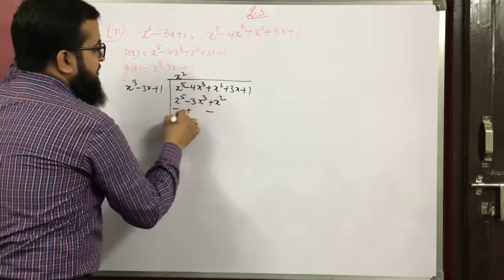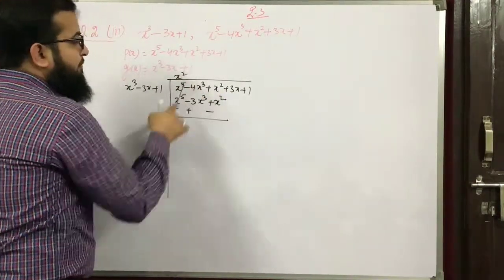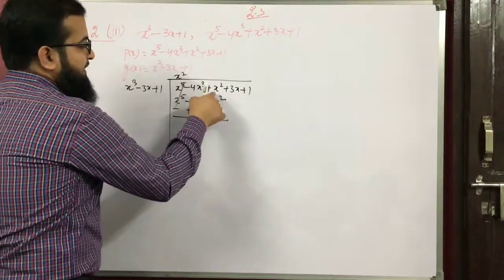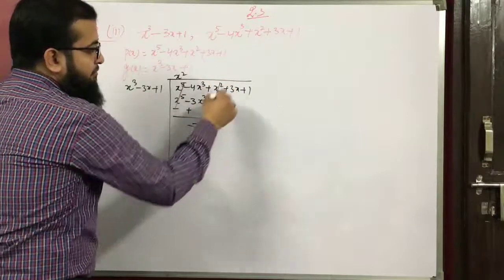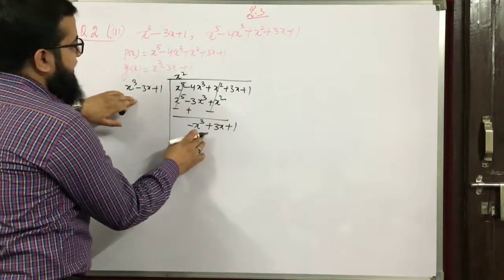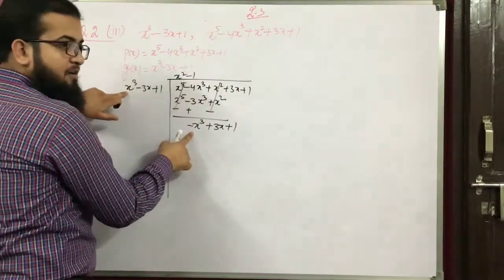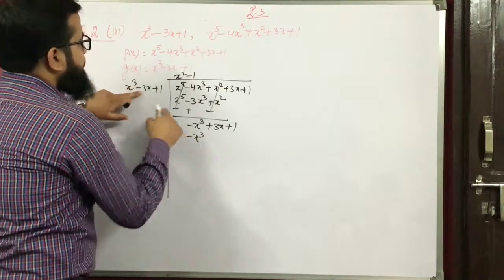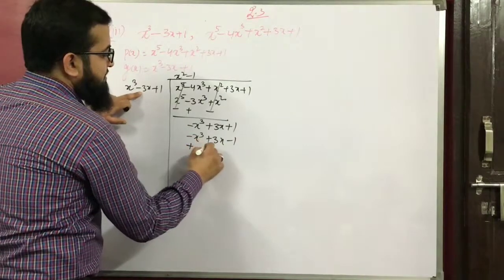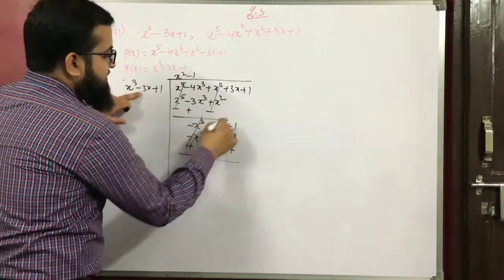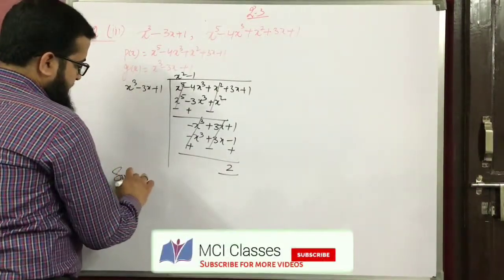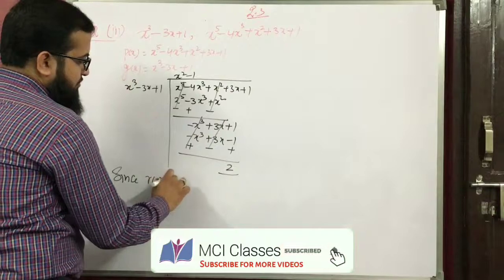After the first step, minus 4x³ plus 3x³ gives minus x³. Then x² minus x² cancels. Continuing the steps: 3x plus 1 — terms cancel — and remainder equals 2. Remainder is not equal to 0.